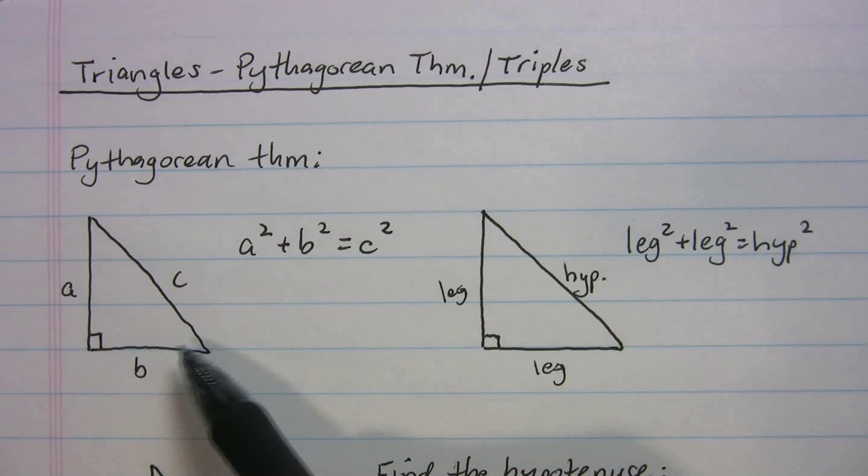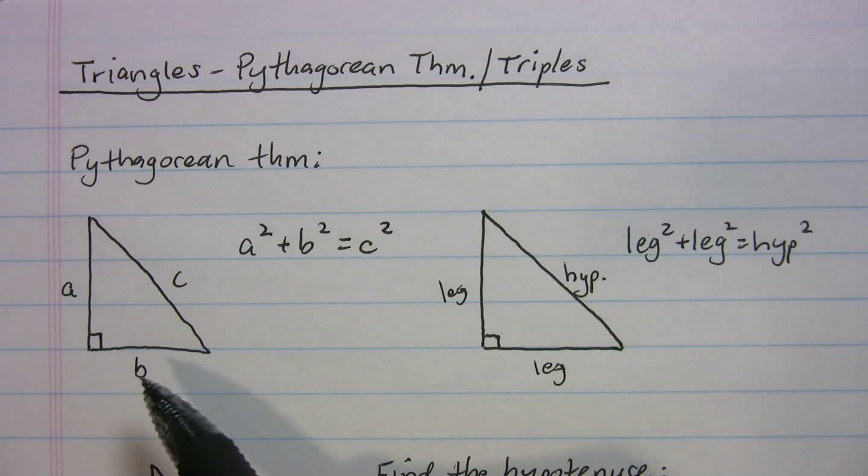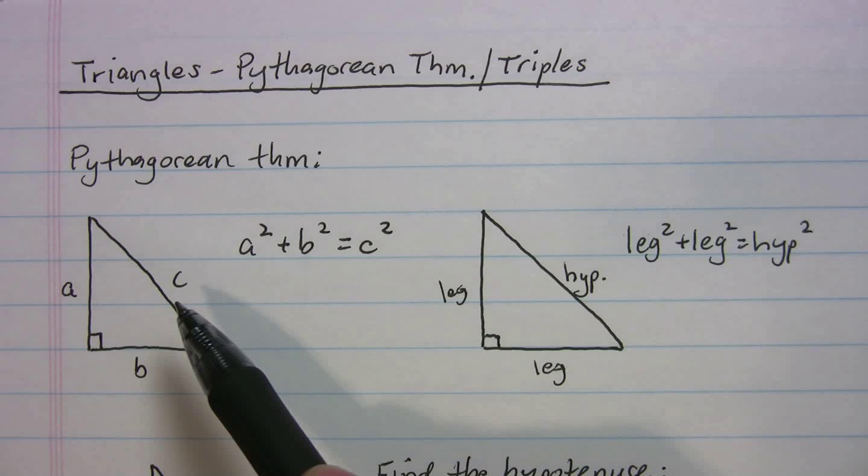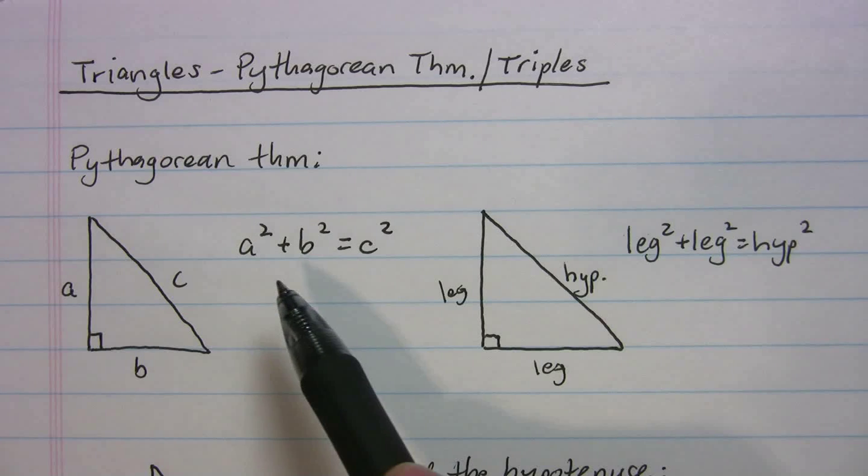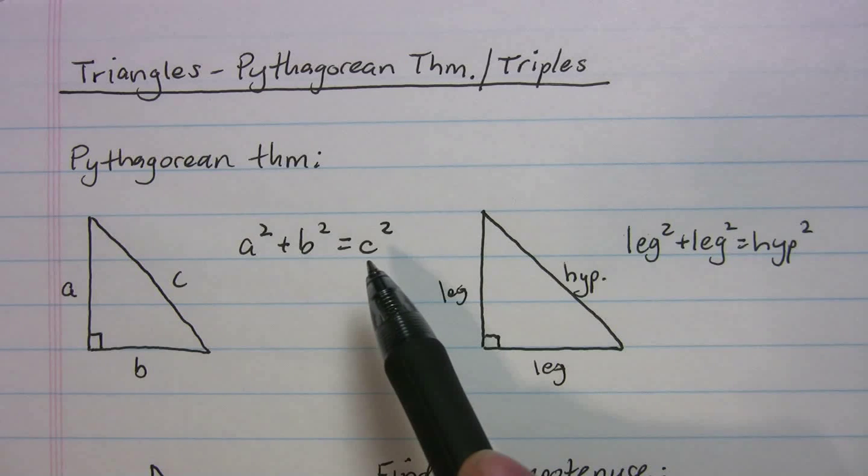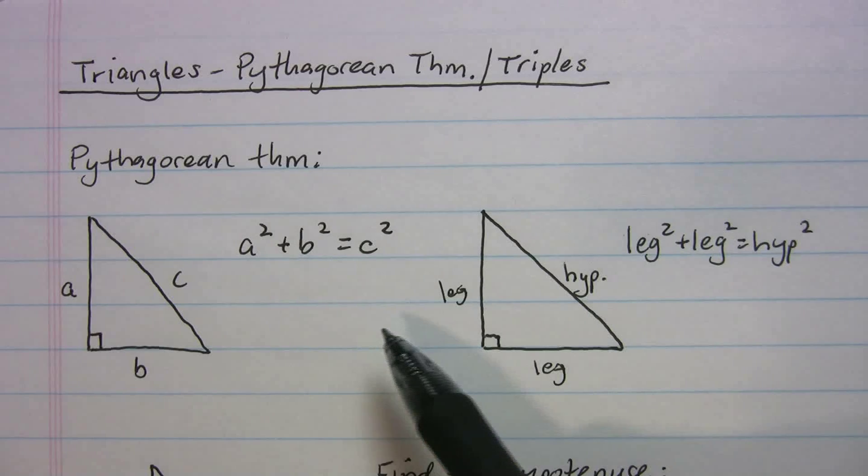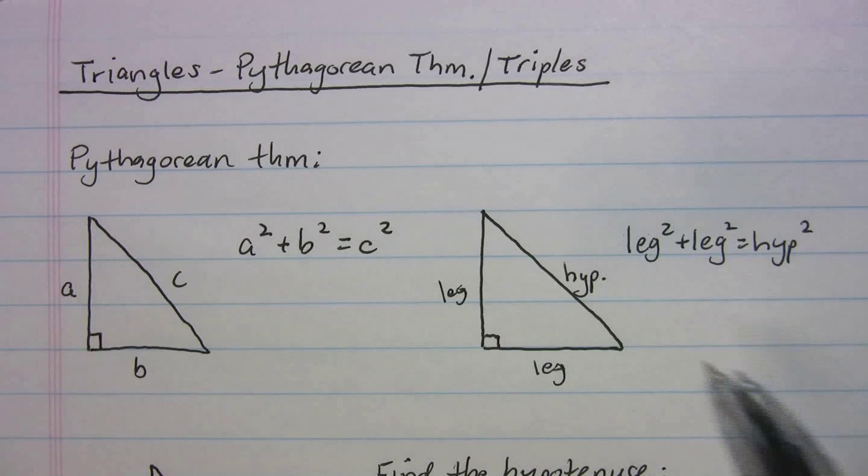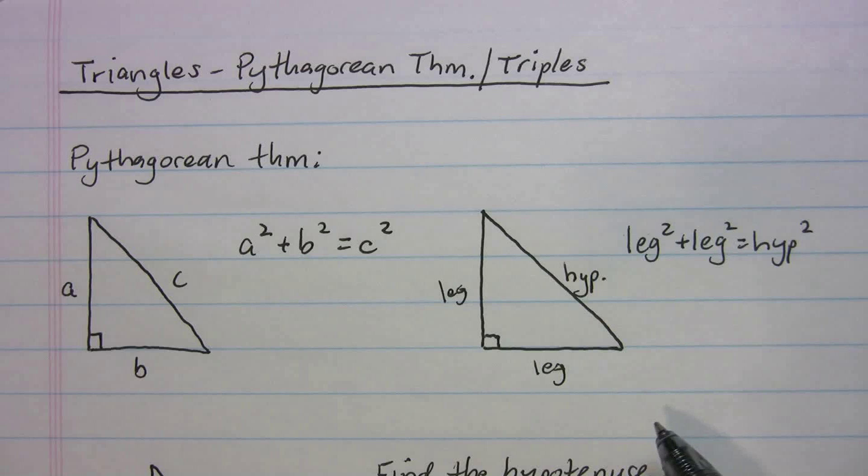So let's review the Pythagorean theorem. You have some right triangle here, and you have legs a and b and hypotenuse c. Well, you can say that a squared plus b squared equals c squared, and you've probably said that many times in high school. What does that actually mean?